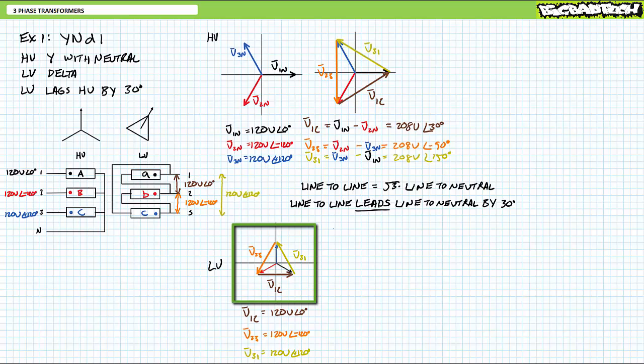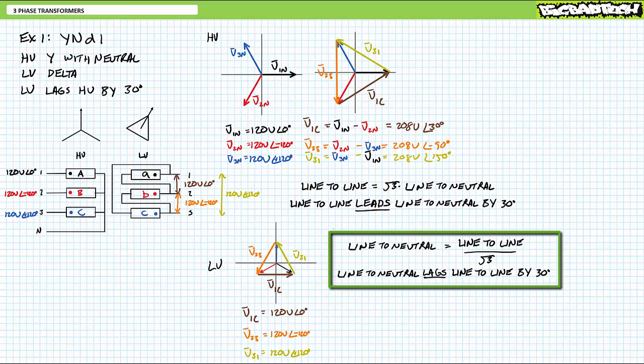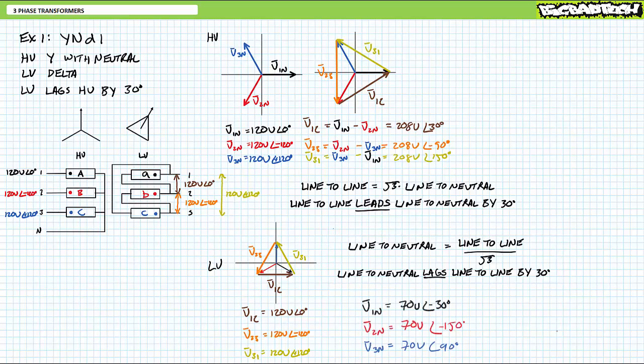To determine this new configuration's line-to-virtual-neutrals — the little virtual points inside the delta configured output — one could perform the reverse calculation. If the line-to-line voltages are roughly 1.73 times that of line-to-neutrals and lead the line-to-neutrals by 30 degrees, it stands to reason that the line-to-neutrals are one over square root three, or roughly 0.577 times the line-to-lines, and they lag the line-to-lines by 30 degrees. Doing so yields roughly 70 volts at an angle of negative 30 degrees, 70 volts at negative 150 degrees, and 70 volts at 90 degrees. The reference line-to-virtual-neutral for the delta configured output lags by 30 degrees — hence the one o'clock designation.